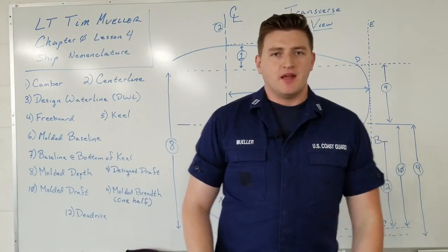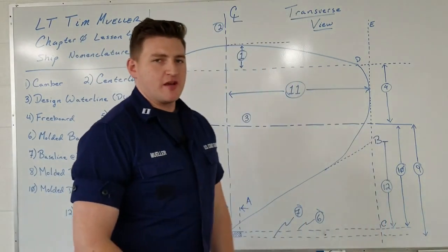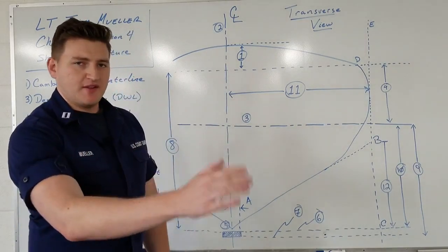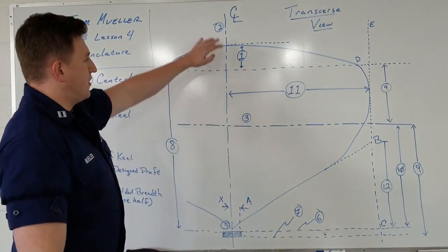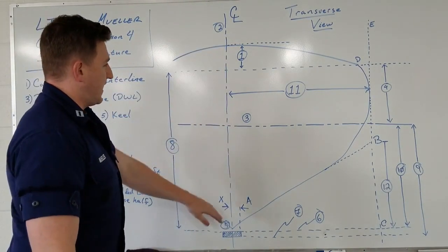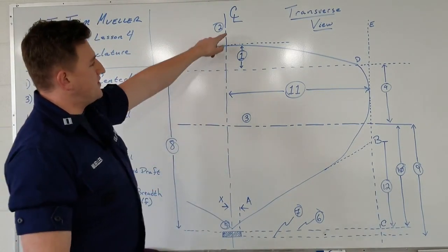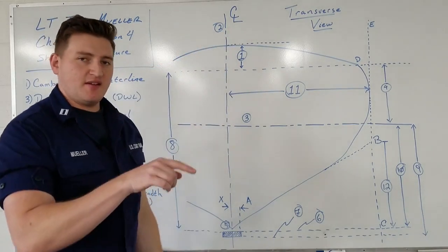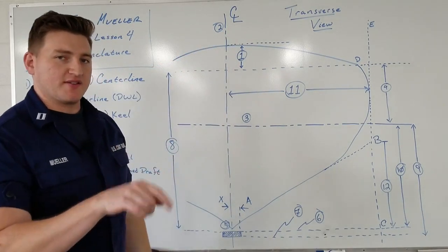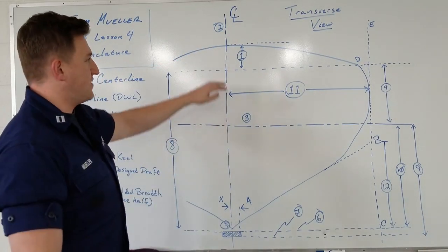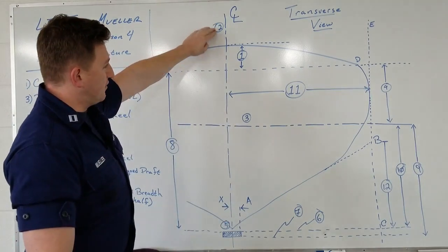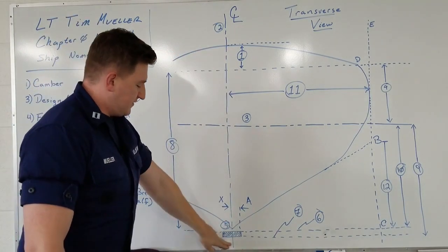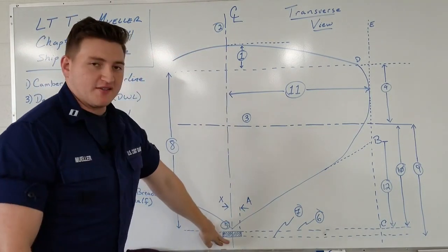Next is the center line. It runs all the way from stem to stern and bisects the boat perfectly in half. The symbol we'll be using is a C with an L that starts in the middle of that C. You can see the center line runs all the way from the top down to what we'll find is the keel.